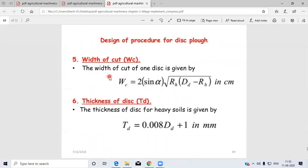Fifth point is the width of cut of one disc. The width of cut is given by Wc = 2sin(α)√[R(Dd - R)] in centimeters.